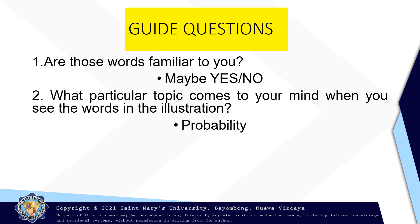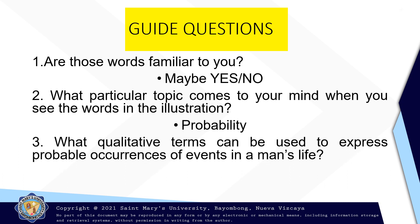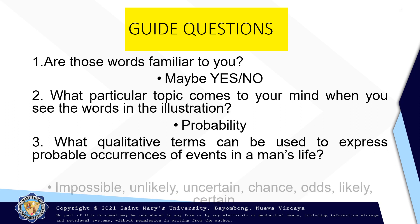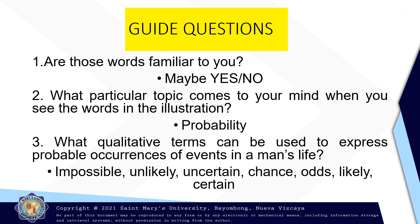The particular topic is on probability. But this week, we will just focus first on the basic terms that are related to probability. After next week, we will deal on solving probability of a certain event. What qualitative terms can be used to express probable occurrences of events in a man's life? We have impossible, unlikely, uncertain, chance, odds, likely, certain, and many more.